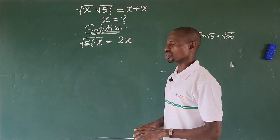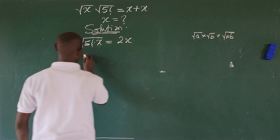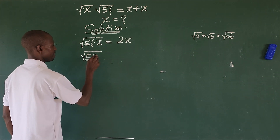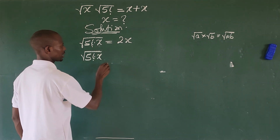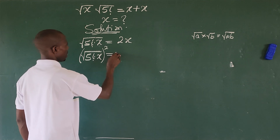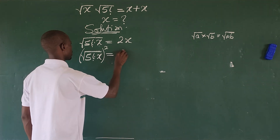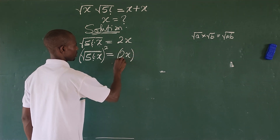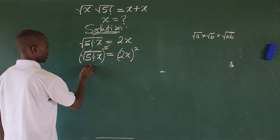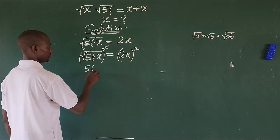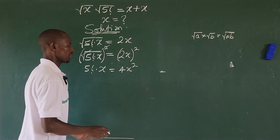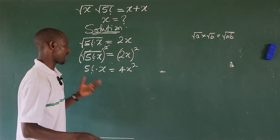Now we need to eliminate the square root radical, so we square both sides of the equation. This gives us the square root of (5 factorial times x) squared equals (2x) squared, which simplifies to 5 factorial times x equals 4x squared.